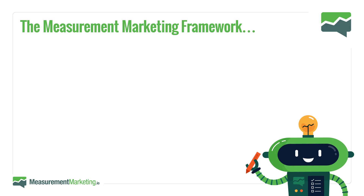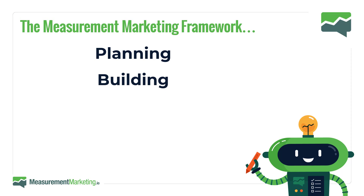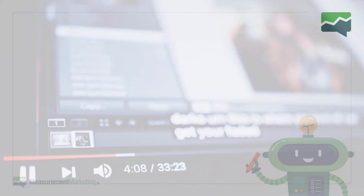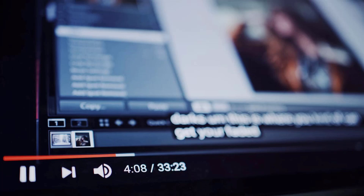That framework has five points. First is planning — figuring out what questions you want to answer and what actions you'll take based on those answers. Then there's building, where you set everything up to be tracked properly. Then reporting, where you pull out the answers. Then forecasting once you have base benchmarks. And ultimately you send traffic against your forecast to find out what's working, which helps decide where to focus in your customer journey or funnel optimization.